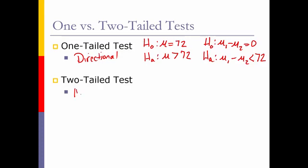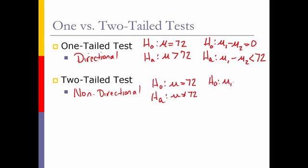The two-tailed test is just non-directional. And when we say non-directional, we'll say that mu is equal to 72, using the one-sample case from above. And then for the two-sample case, mu1 minus mu2 is equal to zero, and mu1 minus mu2 is not equal to zero.